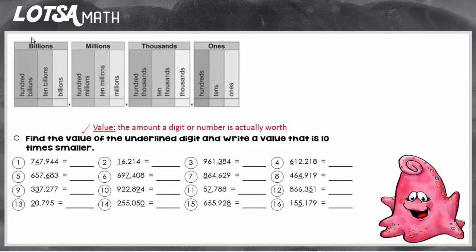So it says find the value, and remember value is the amount a digit or number is actually worth. You're going to find the value of the underlined digit, and a digit is just a number, zero through nine, that's going to represent a value. But then you're going to write the value ten times smaller, and ten times smaller means to divide by ten.